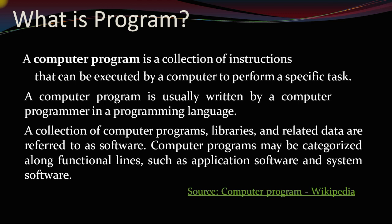So, what is actually software? Software is nothing but a collection of programs and related libraries — meaning predefined functions stored in header files or library files — and the related data. Programs are written in programming languages like C, C++, Java, Python, VB, etc. Software is of two types: system software, which means operating systems, and application software, which is specific to a domain — like Tally, AutoCAD, and Adobe Photoshop, which are called application softwares.